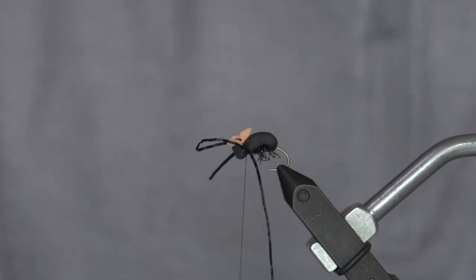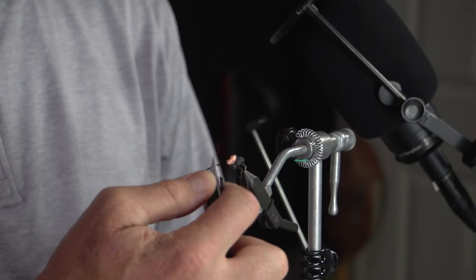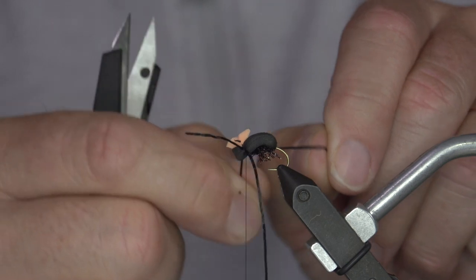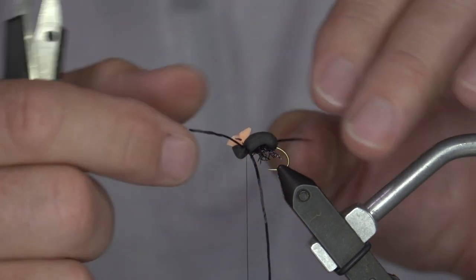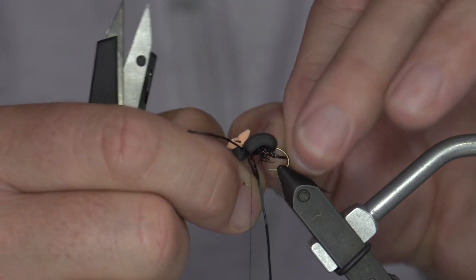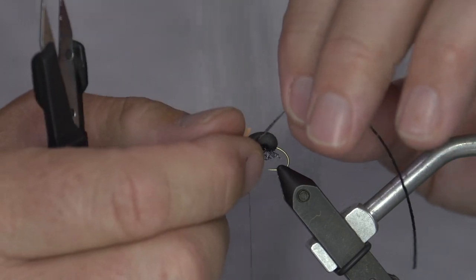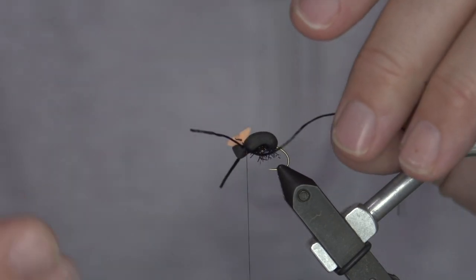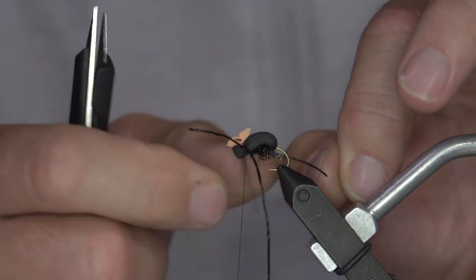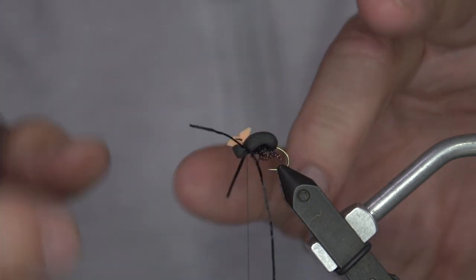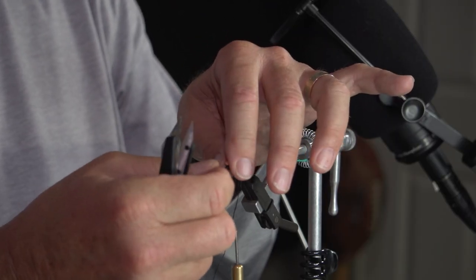I will take now and cut these legs, slide them into position where I want them. I see a lot of guys that like to put them up even with the foam and that's fine. I like them underneath the foam. I want this bug to land hook down obviously to make sure that happens. Because a lot of foam on top, a lot of weight, I like to put these legs just underneath the foam, in between the foam and the body underneath.